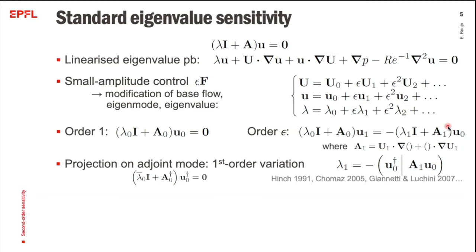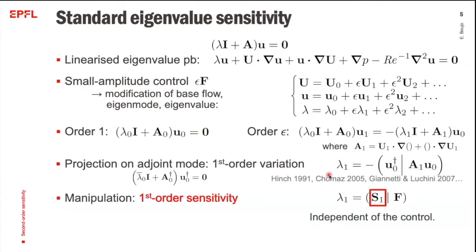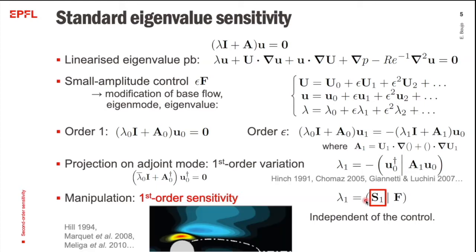You project that onto the adjoint mode, which eliminates the left-hand side, and you get this expression for the first-order eigenvalue variation. You can manipulate it to isolate the control on one side and obtain the so-called first-order sensitivity on the other side, which is independent of the control — it only depends on the uncontrolled base flow and uncontrolled eigenmode. Since it is a vector, you can easily plot and visualize it.